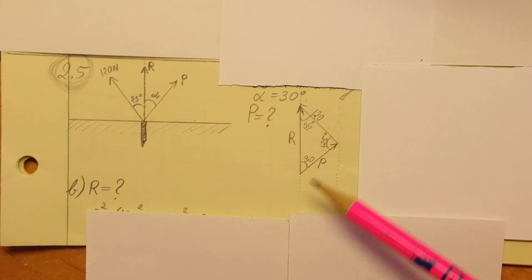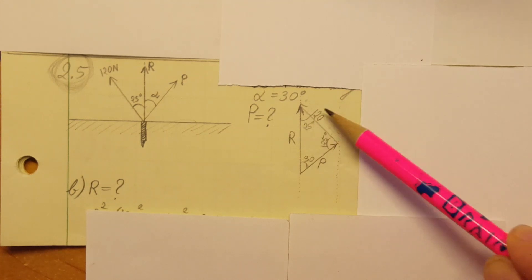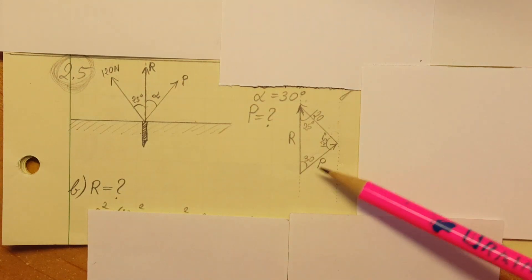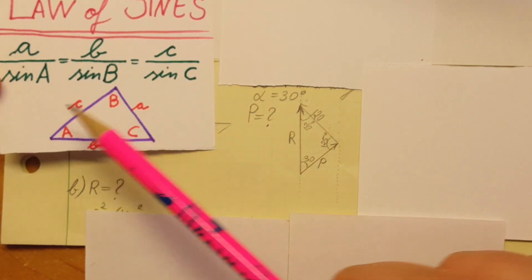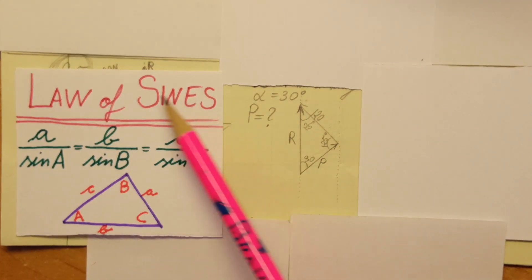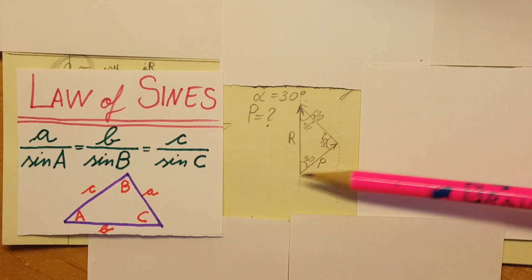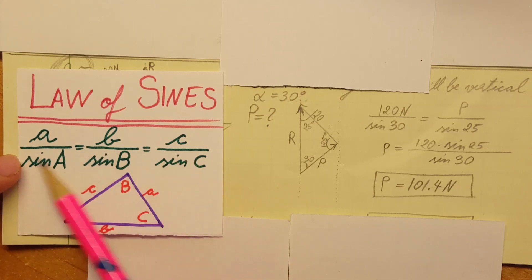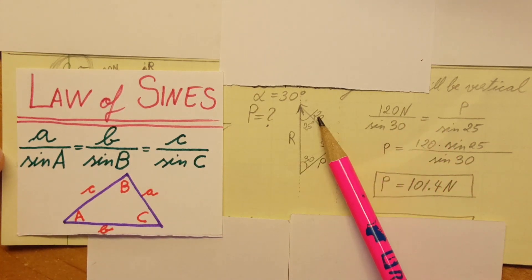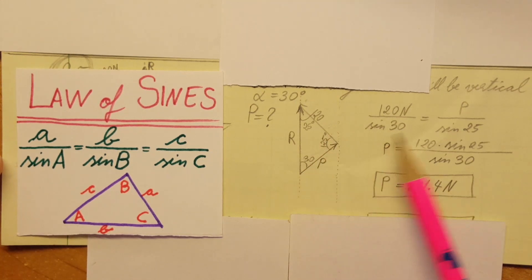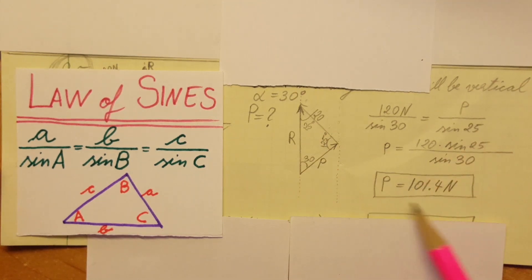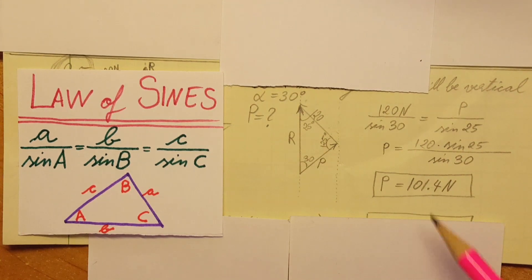So in part A of the problem they are asking us to find P, this one right here. We know this angle, this angle, this angle, and we know this vector - this side of the triangle. In order to calculate this one, what we can use is the law of sines. We're going to apply it to this force triangle and write only two of these parts. We're going to use this side over sine 30 and then P, this side, over sine of 25. So for P we calculate 101.4 newtons.